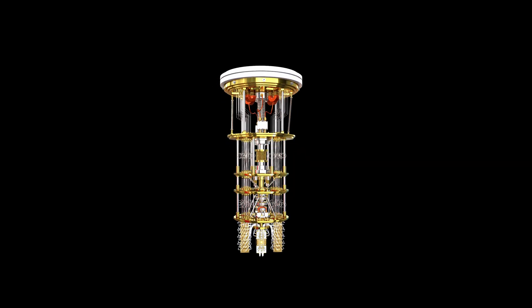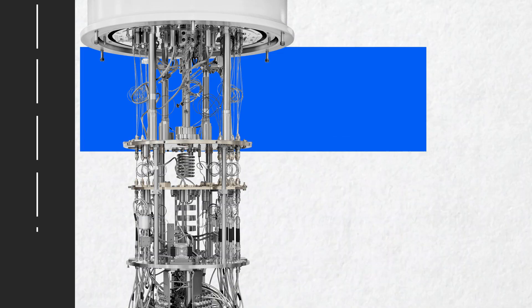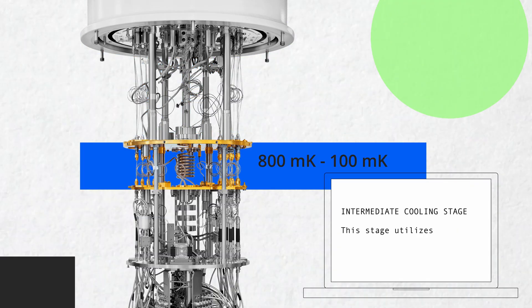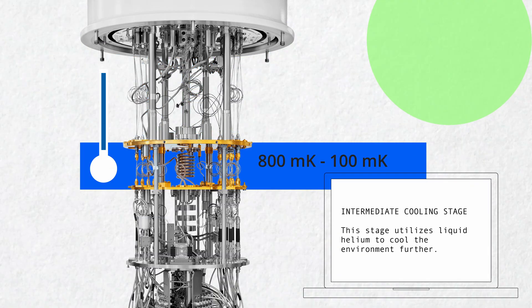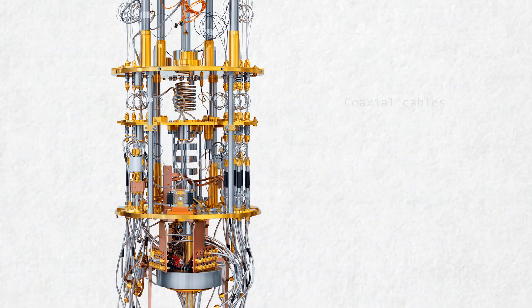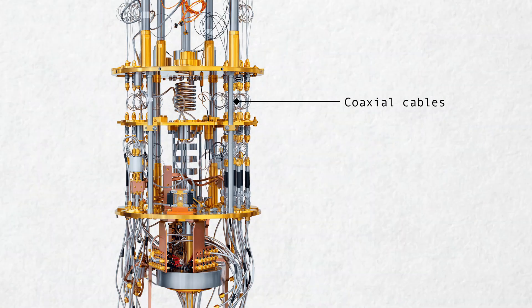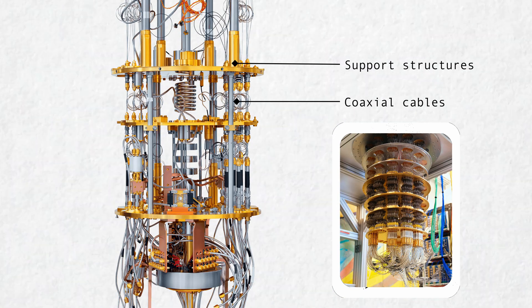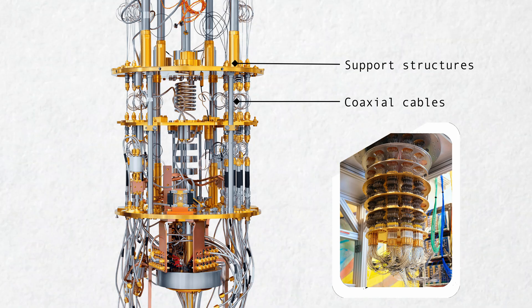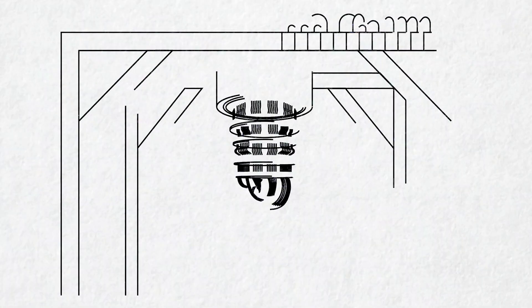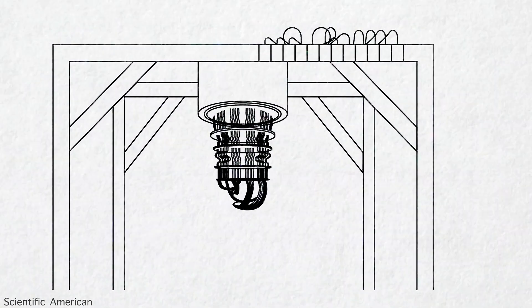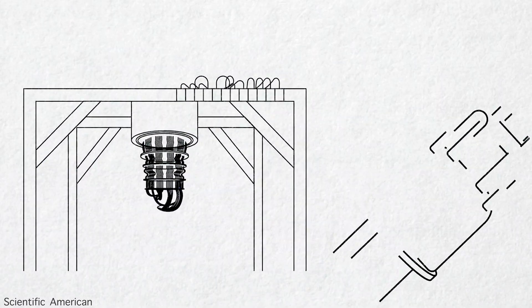Next stop: the intermediate floor between about 800 mK and 100 mK. These are coaxial cables. They're used to transmit microwave signals in low temperature environments, and they must be capable of operating at high frequencies, in the range of several gigahertz, to control qubits.